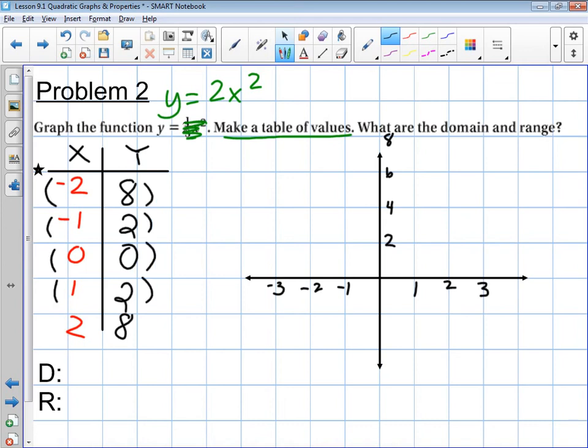Here are my ordered pairs, or my coordinates. Negative 2, 8. Negative 1, 2. 0, 0, 1, 2, and 2, 8. Now, you can certainly choose to do more points than this, but to get a good picture of a parabola, you're going to need at least 5.